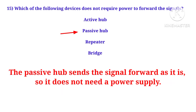Next question: which of the following devices does not require power to forward signals? The correct answer is a passive hub. A passive hub sends the signal forward as it is; it does not need any power supply.